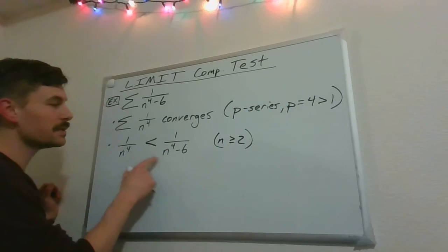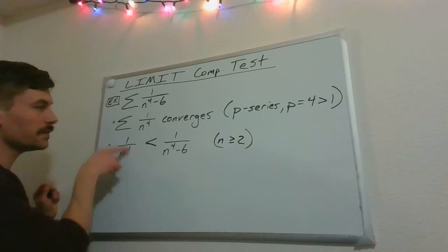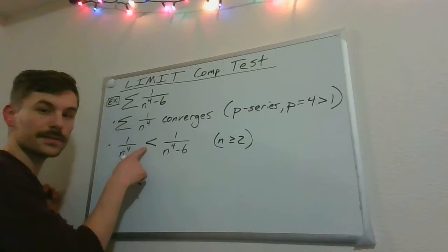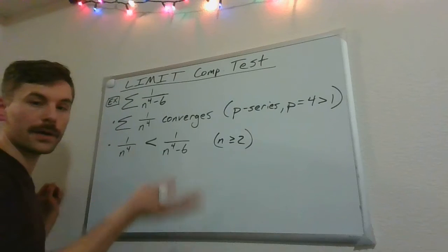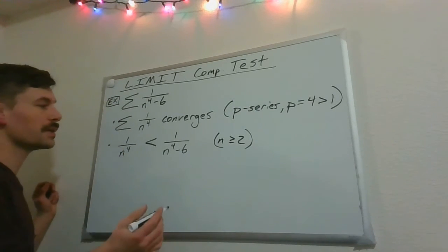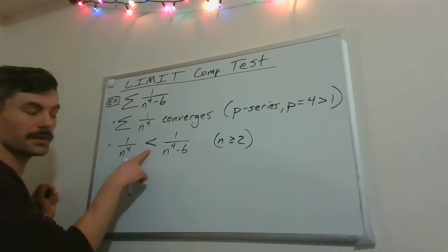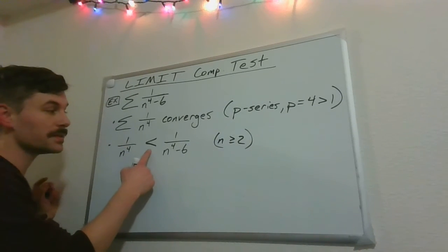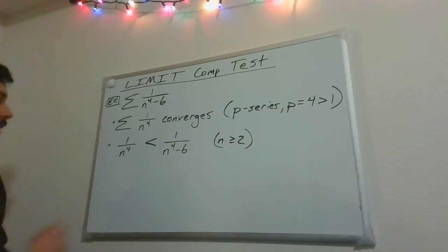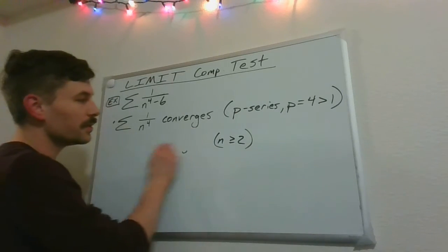The problem is we have something that gives us a convergent series, but it's the smaller series. So we can't really claim anything about a series that's larger than that. So what do we do instead? We can't use a comparison test, right? So this inequality is a bit of a problem. So direct comparison is no good.